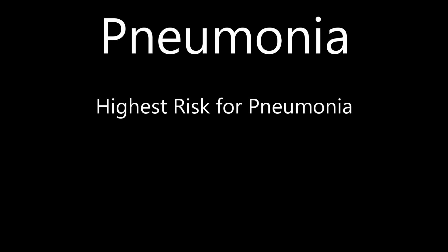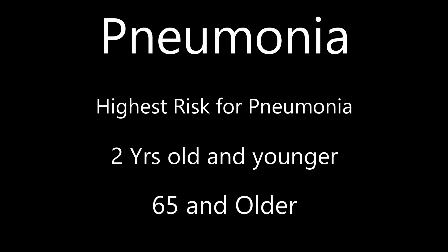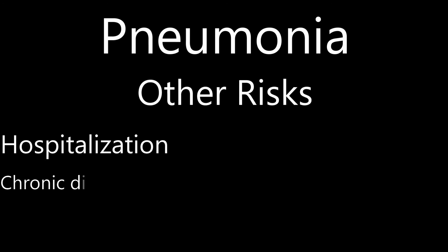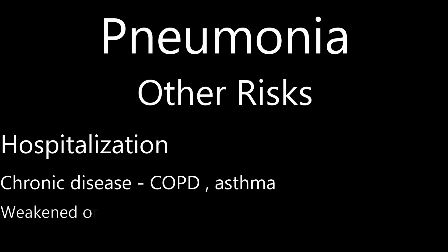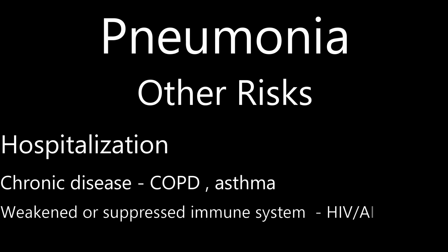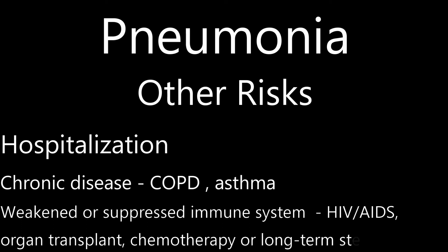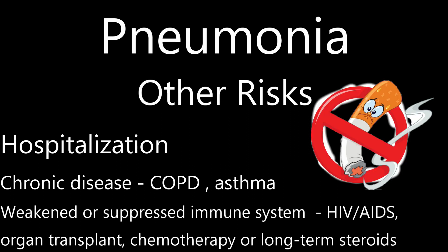Anybody can be affected by pneumonia, but two groups are at highest risk: children two years old or younger, and people over the age of 65. Other risk factors include being hospitalized, having chronic diseases like COPD or asthma, and having a weakened or suppressed immune system — such as people with HIV or AIDS, those who've had organ transplants, or those receiving chemotherapy or long-term steroids. Smoking also damages the body's natural defenses against the bacteria and viruses that cause pneumonia.